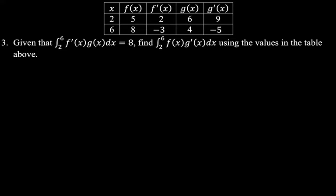Given that the integral from 2 to 6 of f prime times g dx is 8, find the integral from 2 to 6 of f of x times g prime of x dx, using the values in the table. All of these problems come down to: you look at it, think 'what am I going to do?', and then remember integration by parts exists. Just do integration by parts — you will have enough information somehow.